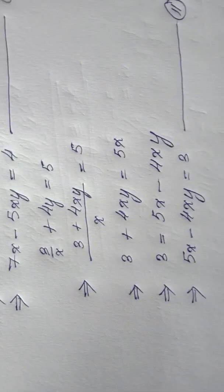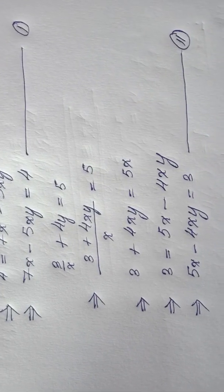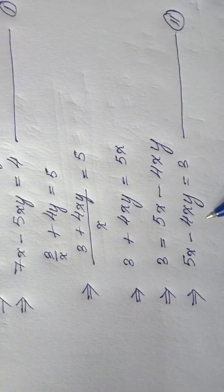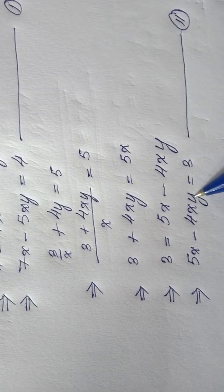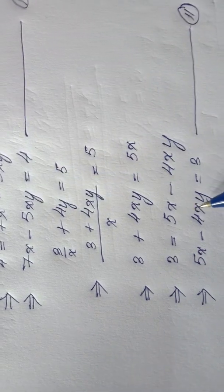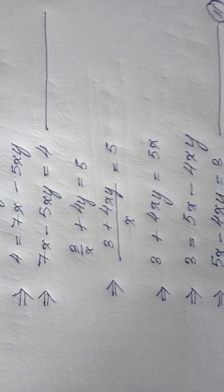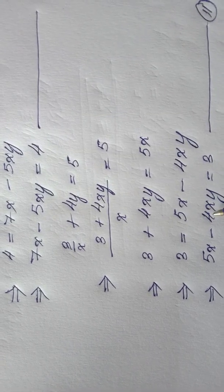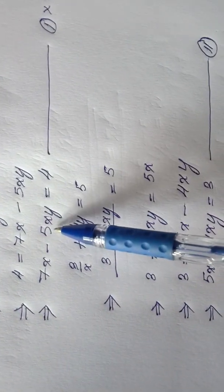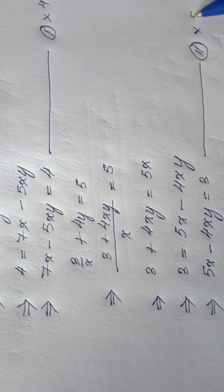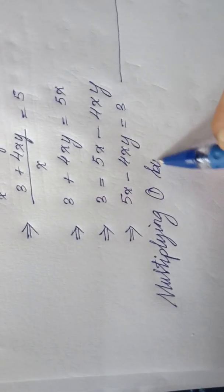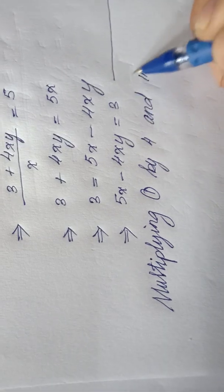Now looking at equation 1 and equation 2, both are linear equations with x and xy terms. My goal is to make the xy coefficients equal so I can eliminate them. Equation 1 has coefficient 5 for xy, and equation 2 has coefficient 4. So I will multiply equation 1 by 4 and equation 2 by 5.